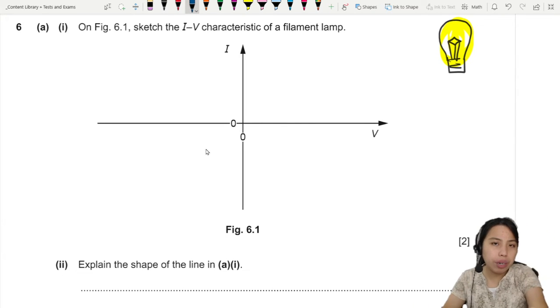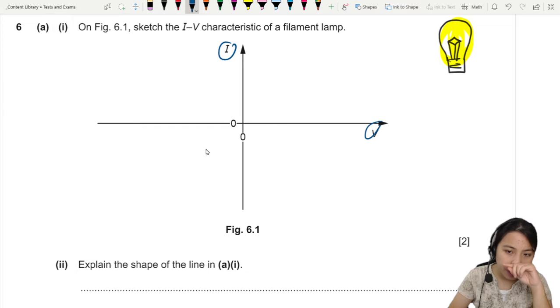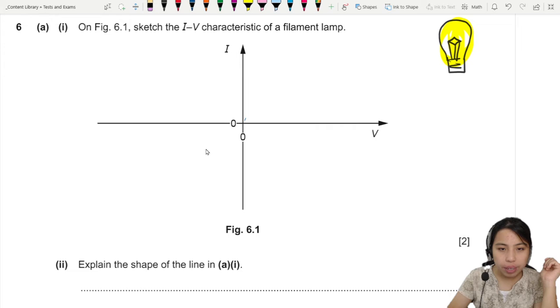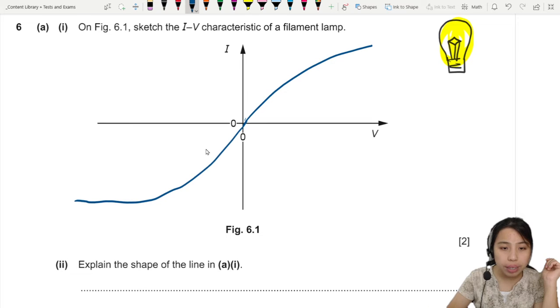So this one you got to memorize the shape of the characteristic curve for I against V. It's going to be shaped like this and then doesn't flatten the I, just gets less steep. Here symmetrical, less steep but not flat, not horizontal at least.